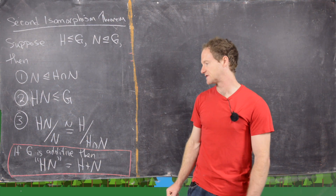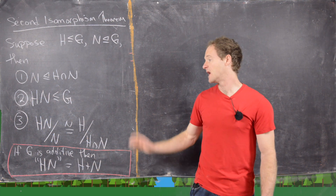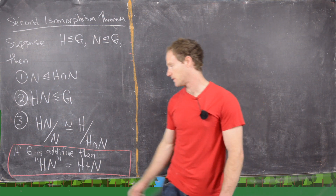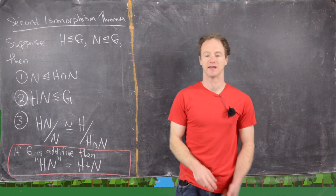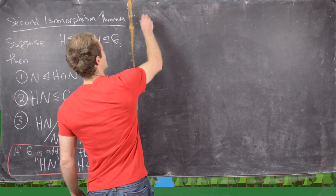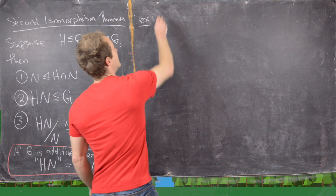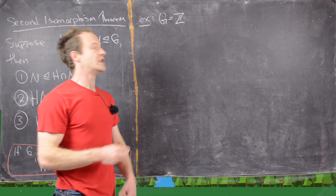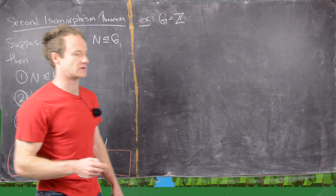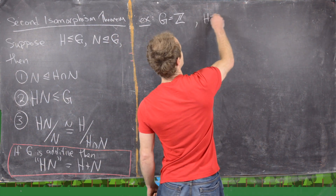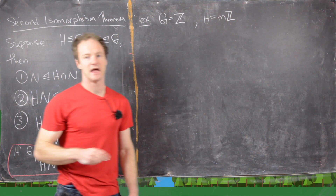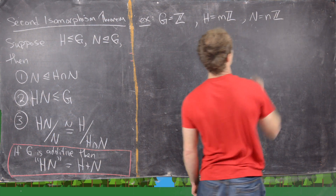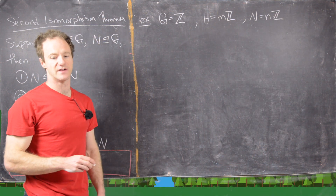I have another video where we prove the second isomorphism theorem — here we're just looking at an application. If G is an additive group, which it will be in our example, then HN is really H plus N. The example I want to look at is where G is the integers under addition. All subgroups of the integers have the form H equals mℤ (all multiples of m) and N equals nℤ (all multiples of n).